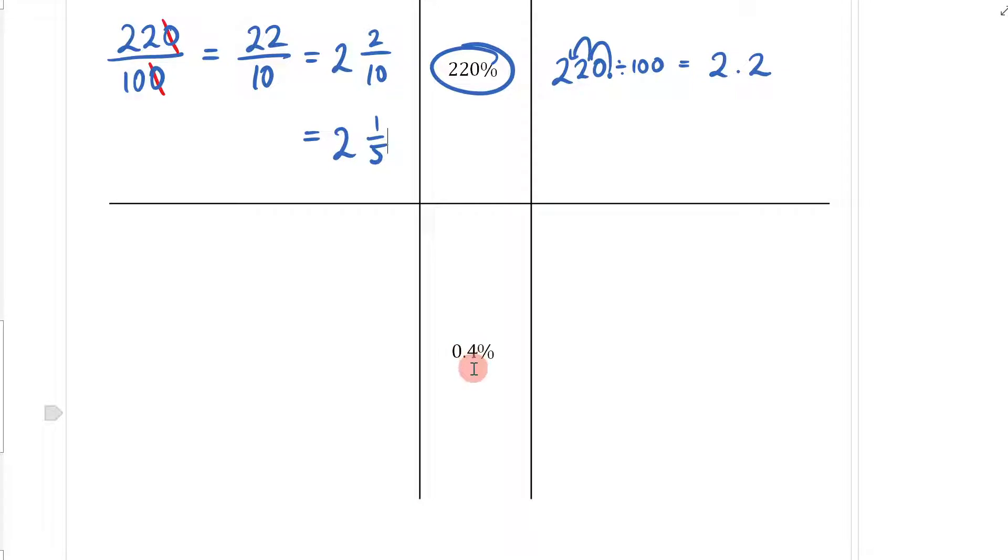My next one is a tricky one. It's 0.4%, but it's really just hammering home the message that you do exactly what we've done before. Don't worry that it looks weird. I take 0.4 and divide it by 100, so I move my decimal once, twice.